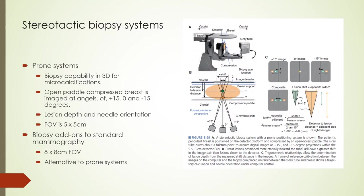Stereotactic breast biopsy systems allow for three-dimensional localization and sampling of breast lesions using targeted biopsy instruments, and are generally used for targeting microcalcifications associated with lesions. In prone systems, the patient lies on a table with the breast hanging through an opening; the breast is compressed and imaged at multiple angles. A computer determines lesion depth and controls needle orientation for biopsy. Image receptors for prone systems are CCD cameras coupled to X-ray phosphor screens with a 5 cm by 5 cm field of view. Digital add-on units with larger fields of view can also be attached to standard mammography units.